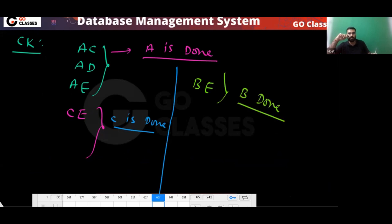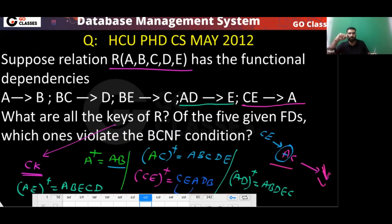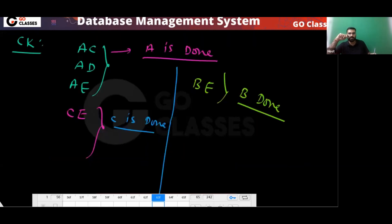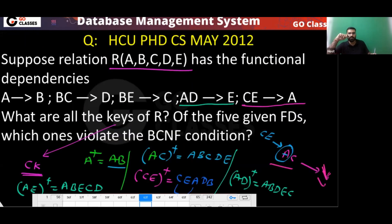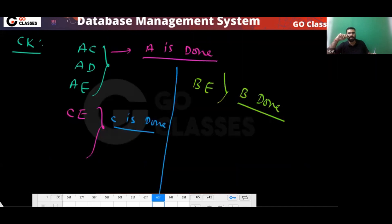The last remaining pair to check is DE. DE is not a candidate key. So the candidate keys are: A, AC, AD, and BE. These appear to be the only candidate keys.